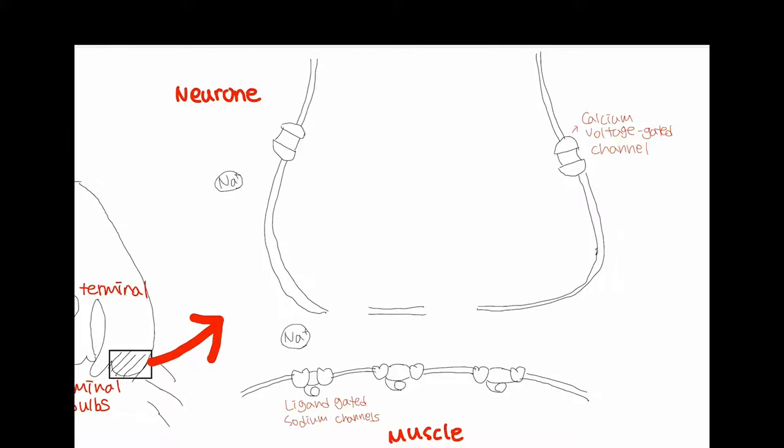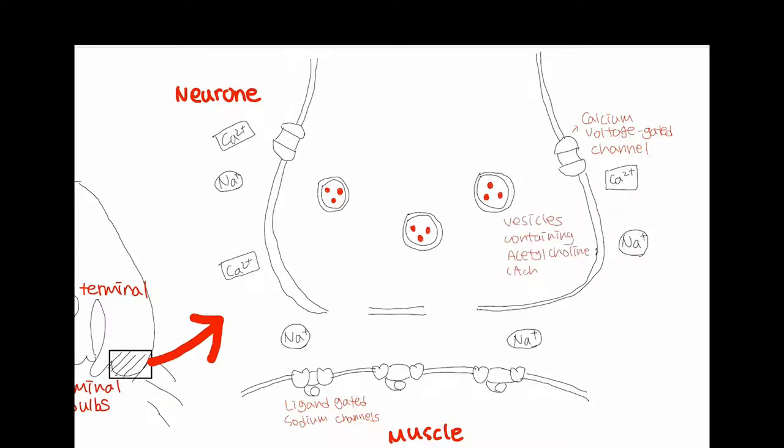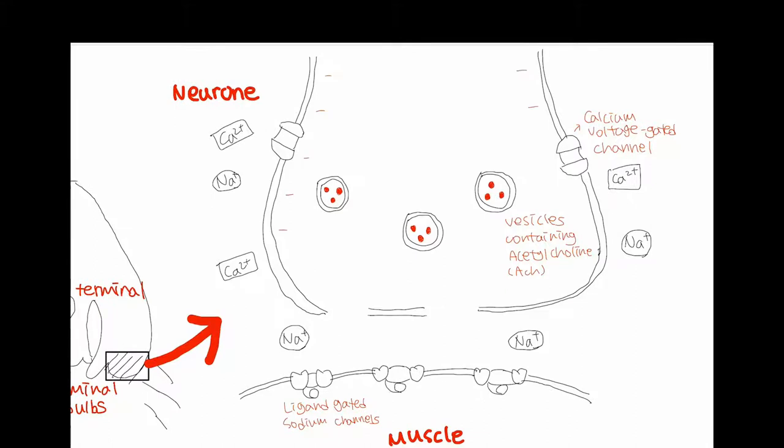Acetylcholine is the neurotransmitter in the case of the neuromuscular junction. Proteins in the presynaptic neuron grab onto calcium and take it to the membrane, along with the acetylcholine vesicle the calcium is attached to. This means the vesicle fuses with the membrane, and acetylcholine is released into the synaptic cleft.